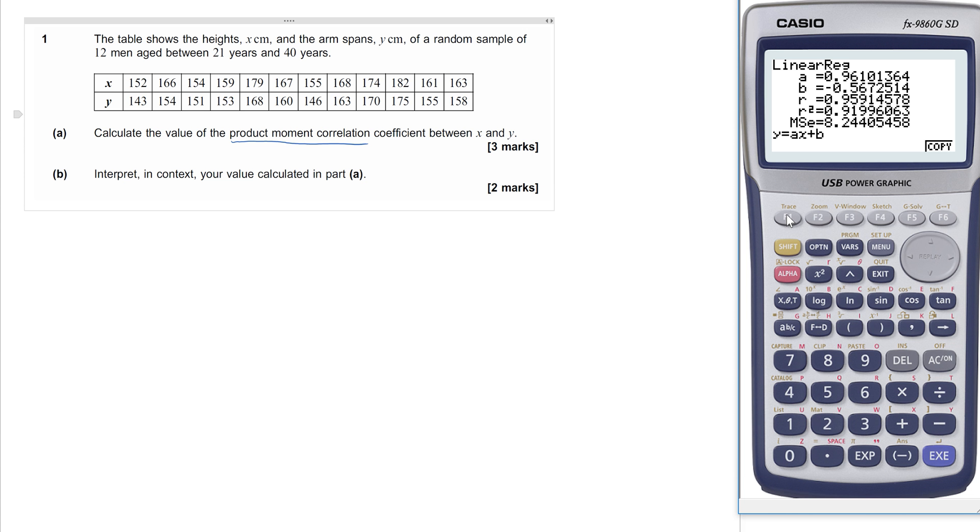The A and the B, Y equals AX plus B, that is to do with the regression line that we're not asked for here. We are looking for the product moment correlation coefficient R. So our answer to part A is this long number here, 0.95915.